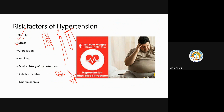Other risk factors include stress, air pollutants — which can cause particle deposition and narrowing — smoking, family history, genetic predisposition, diabetes mellitus, and hyperlipidemia, which is excess deposition of fat or lipid tissues. Any of these can contribute to hypertension or be worsened by it.